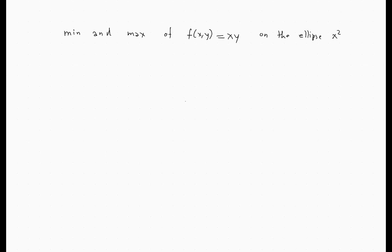What do we need to know here? We need to know theoretically that when we have to find the critical points of a function f(x,y) under the constraint g(x,y) = 0, then we need to solve a system. This is called the method of Lagrange multipliers. We need to solve the system.